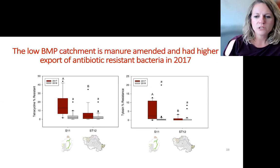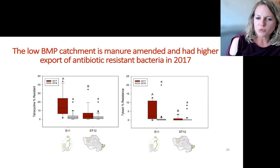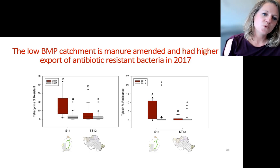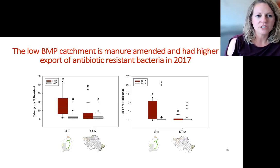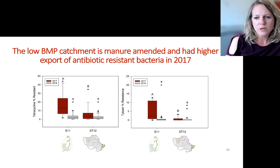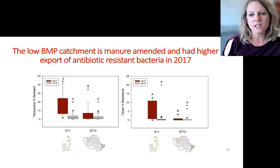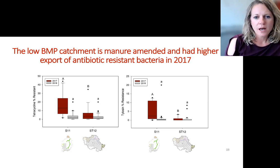The low BMP catchment is also manure-amended, while the high BMP watershed 12 doesn't receive manure — giving us the opportunity to compare manured versus non-manured watersheds. The data shown here is tylosin resistance: the percentage of bacteria resistant to tylosin over two years (2017 and 2018) from the two locations. The catchment with manure had higher export of antibiotic resistant bacteria in 2017. This is phenotypic resistance — we collected samples, filtered them, and grew resistant organisms in tylosin-infused agar and tetracycline.